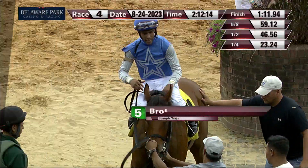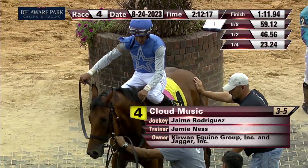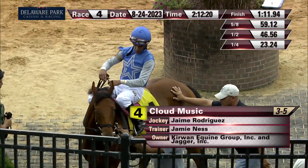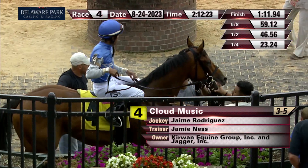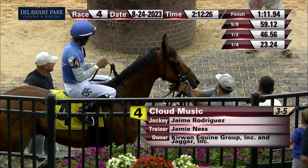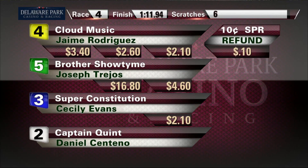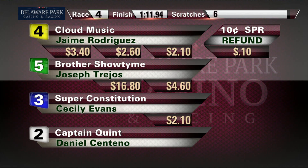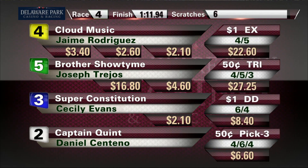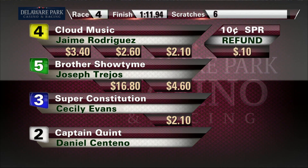Point nine four seconds. Owned by the Kirwin Equine Group and Jagger Incorporated. Back-to-back wins for Jamie Ness, back-to-back wins for Jamie Rodriguez. Winner is bred in Kentucky by Stewart Suimoto. One dollar exacta pays twenty-two sixty. Fifty cent trifecta twenty-seven dollars twenty-five cents. The dollar double paid eight forty. Fifty cent pick three six dollars sixty cents.